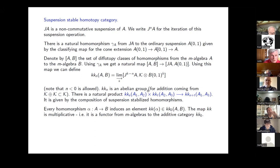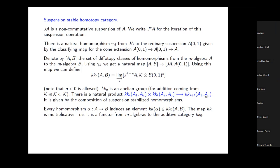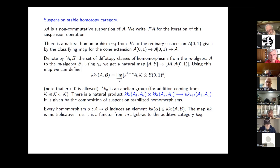KK is an abelian group in a natural way — one can use the embedding of K⊕K into itself, or split the suspension in two halves. Moreover, there is a natural product from KK^s(A₁,A₂) × KK^t(A₂,A₃) to KK^{s+t}(A₁,A₃).